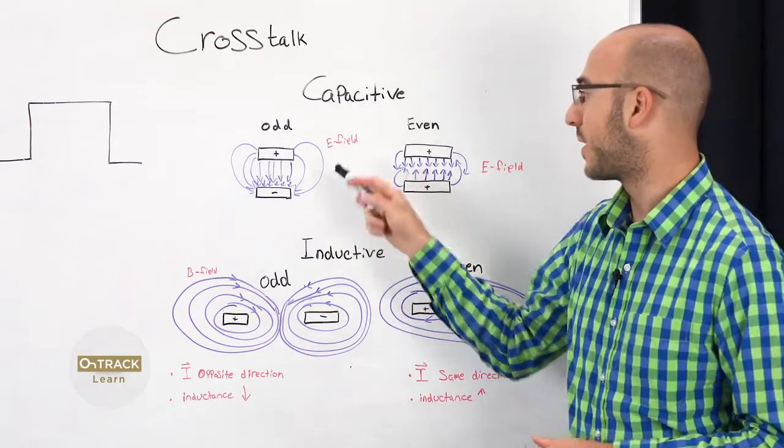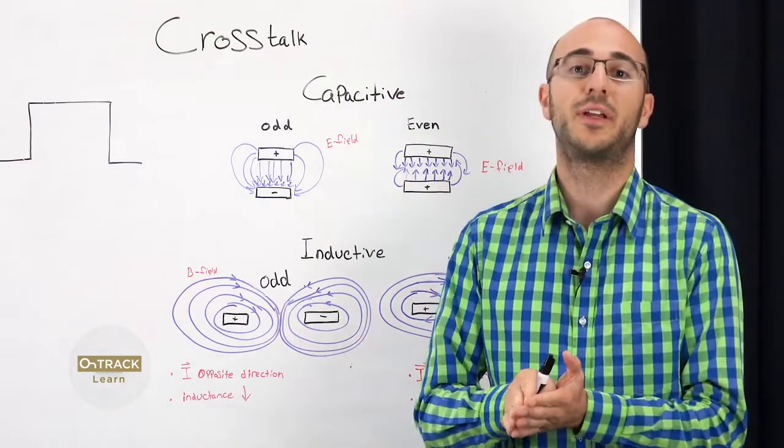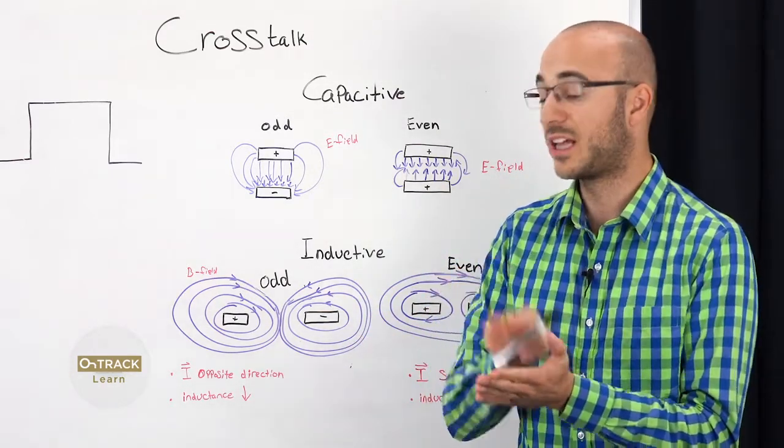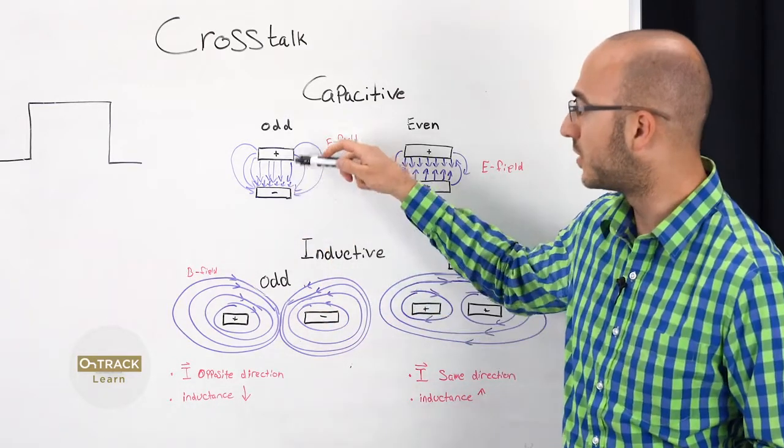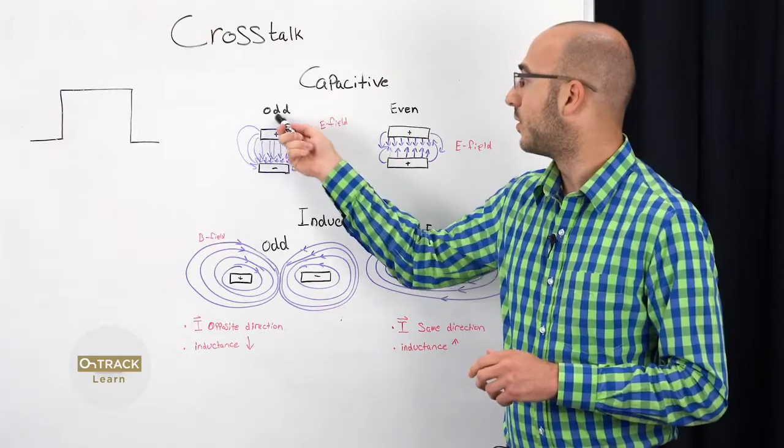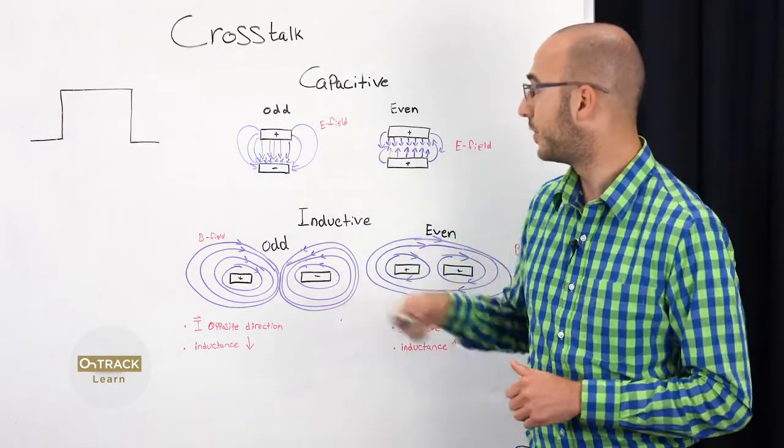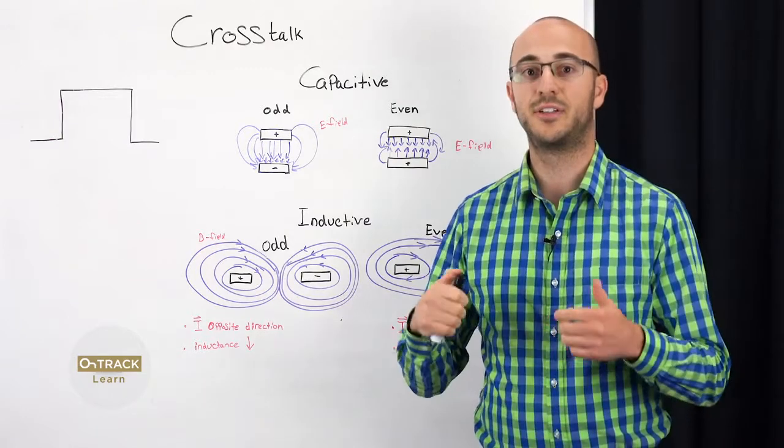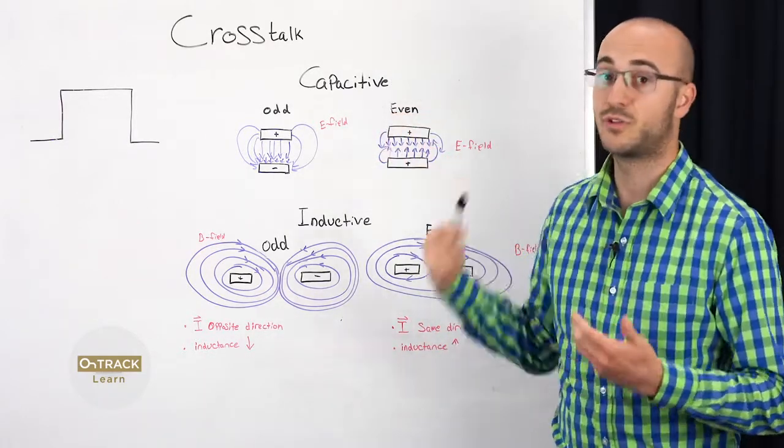What capacitive crosstalk is, is vertical coupling of the electric fields between two conductors or traces. So these would be on separate layers. So odd mode, when they're out of phase, you have a higher potential difference between these two traces. And due to that potential difference, you have higher capacitance and higher capacitive crosstalk.